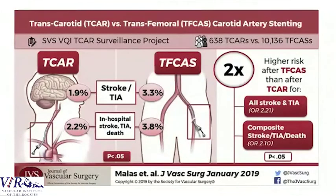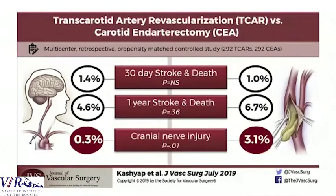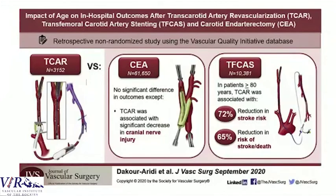A study comparing TCAR versus transfemoral stenting shows a lower stroke rate and lower composite endpoint of stroke, TIA, and death with TCAR — confirming it's a much safer option than traditional carotid stenting. Compared to the gold standard of endarterectomy, the only significantly different outcome was the cranial nerve injury rate, which was lower with TCAR. The evidence consistently shows TCAR has a stroke rate comparable to open surgery, a lower cranial nerve injury rate, and is effective for patients.